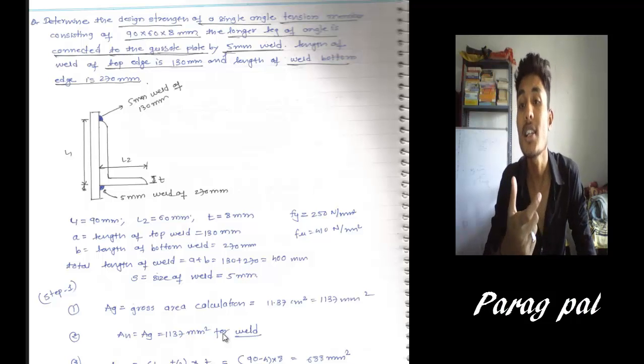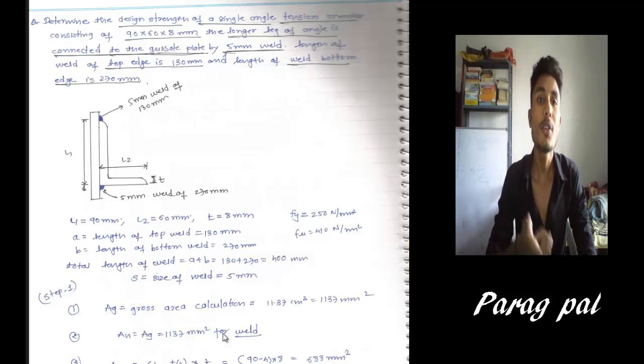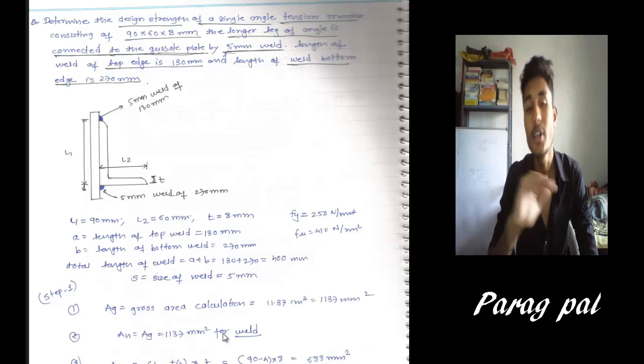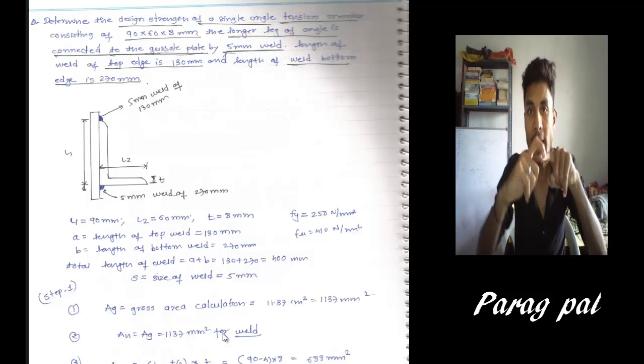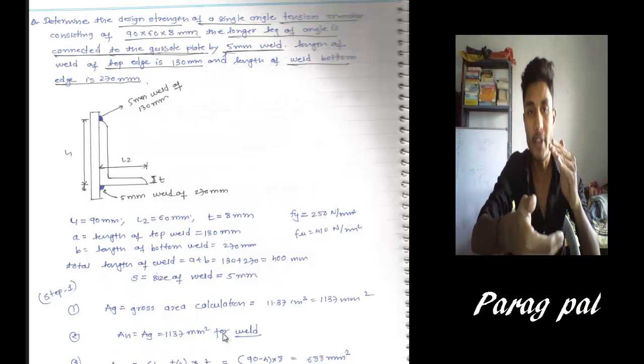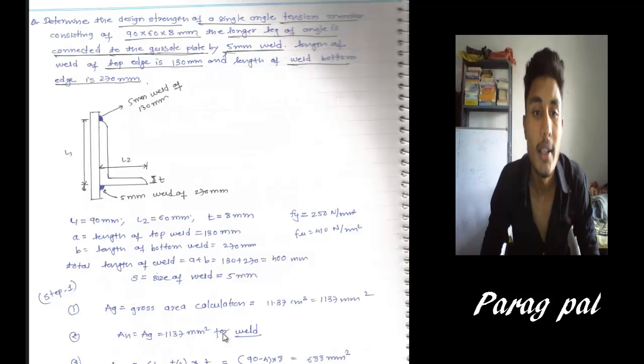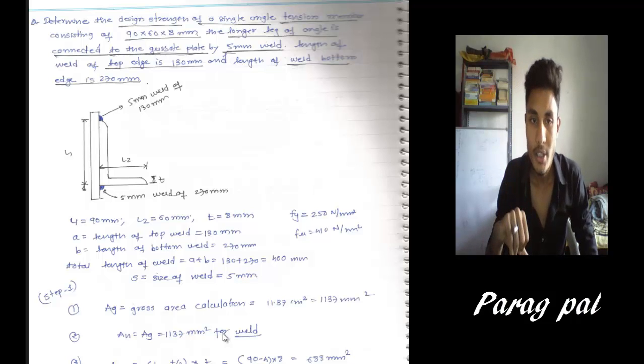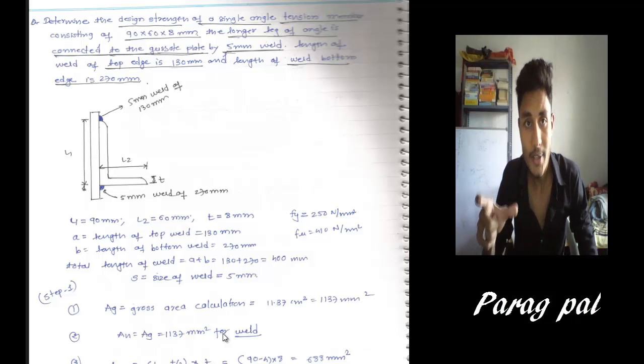Here 5mm is the weld size provided. The length of the weld at top edge is 130, that means the welding from the top edge is 130, and the bottom edge is 270. Here L1, L2, Lt, this unequal angle section is given. A means top edge, B means bottom. A and B actually are the sizes: top edge 130 and bottom edge 270.